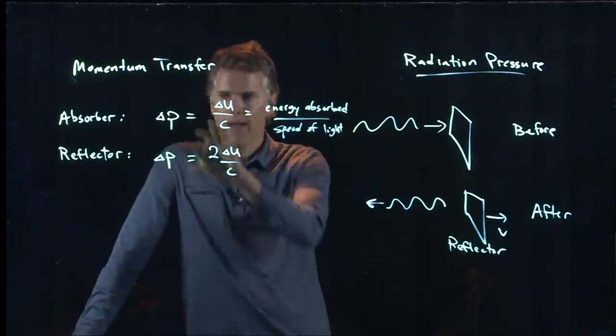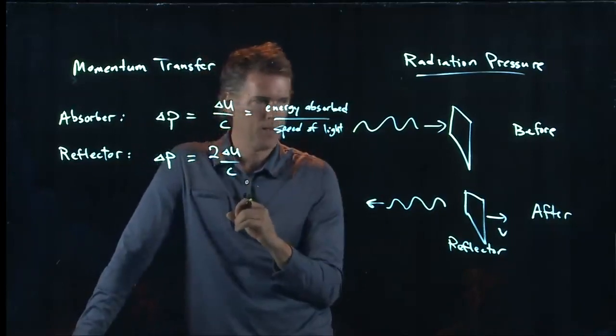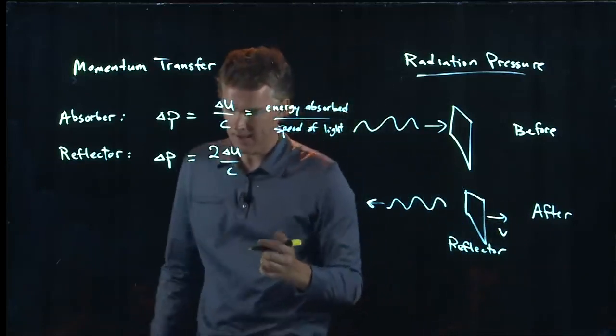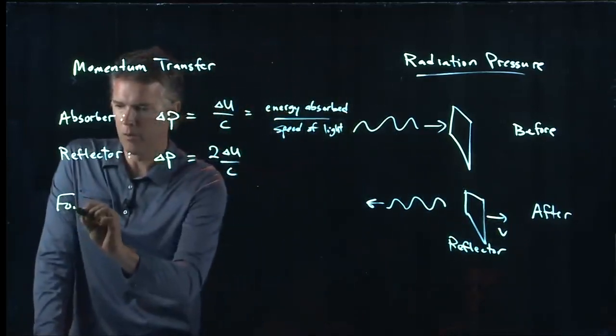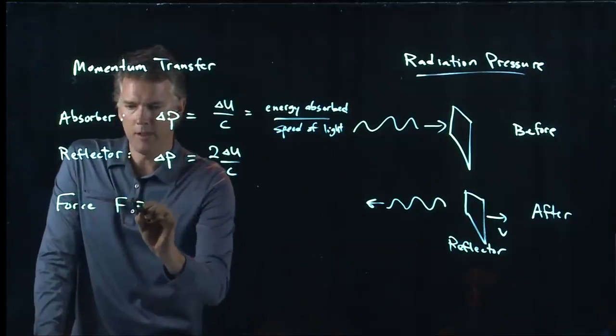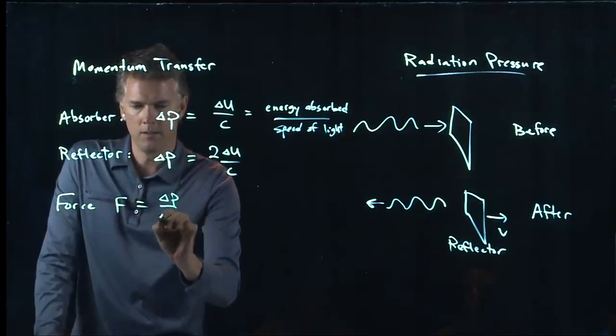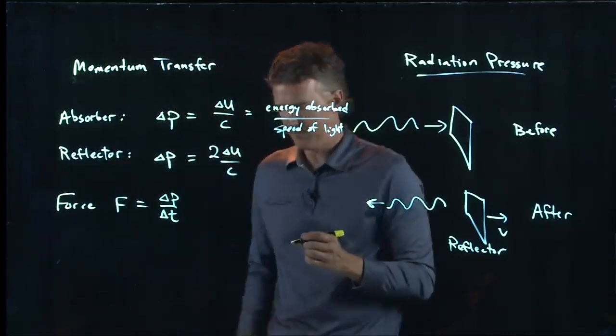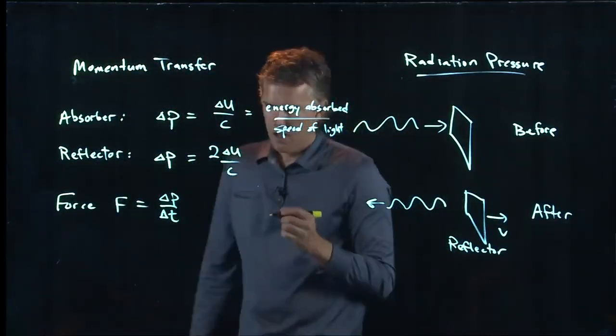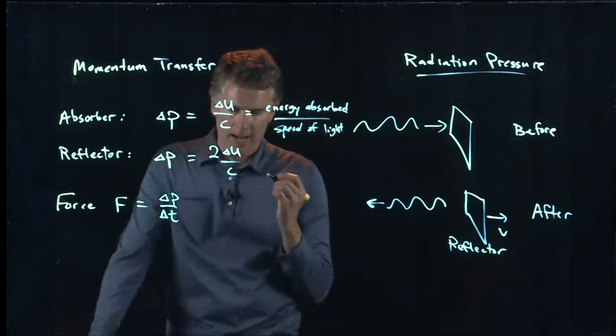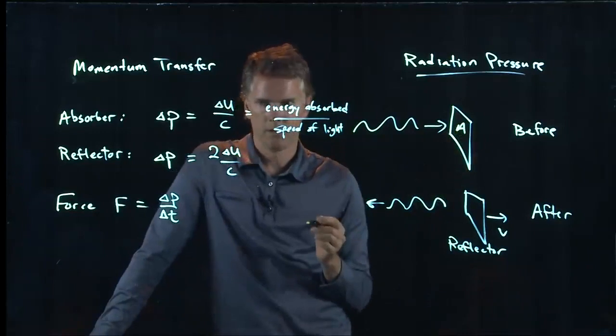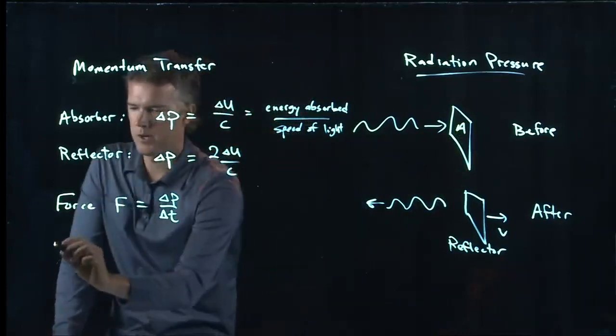But if we have a delta P here, we have some change in the momentum, then we have to have a force because we know that force F is related to momentum. It's delta P over delta T. If I have a force and I have some area, then I have to have a pressure.